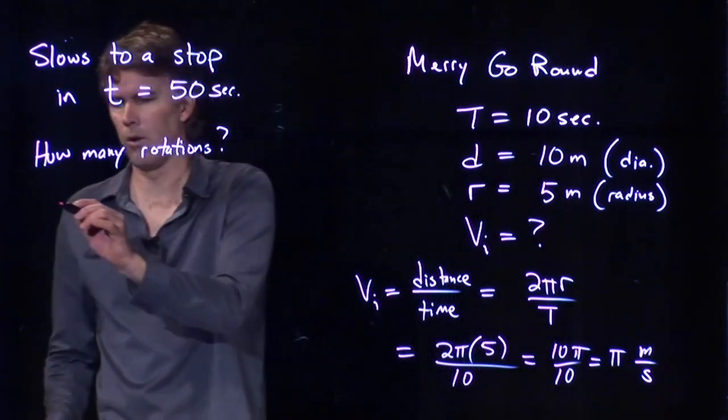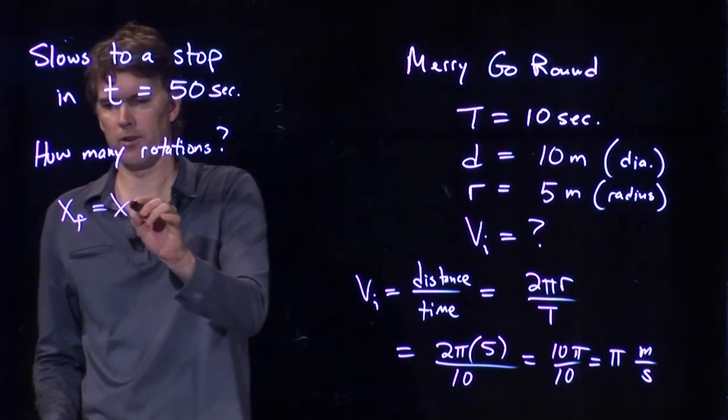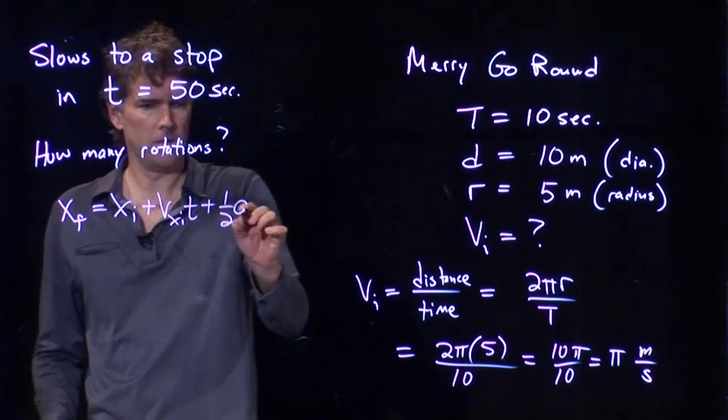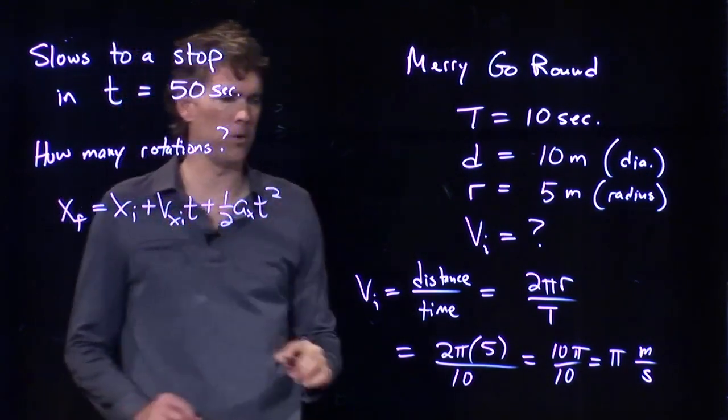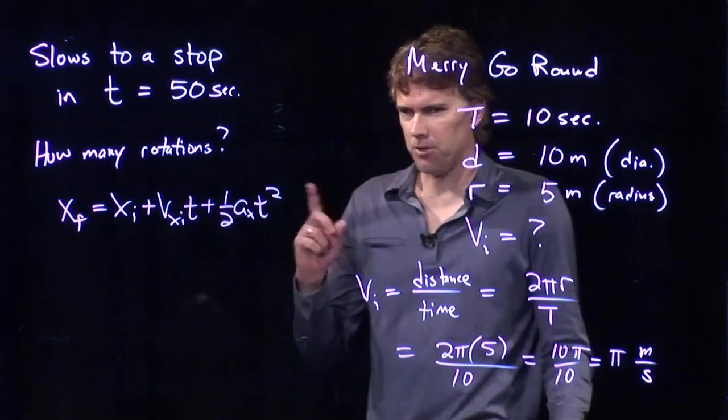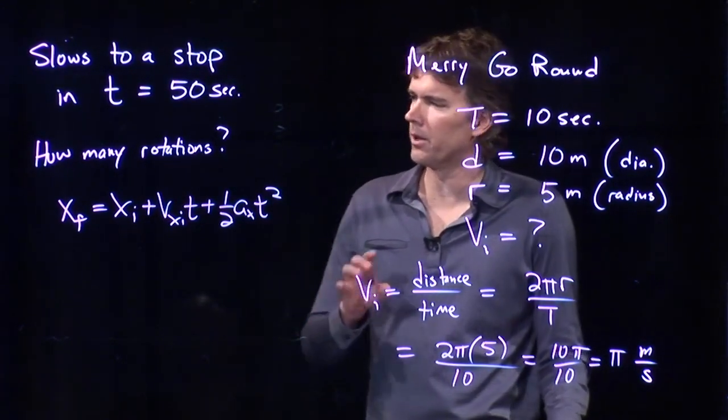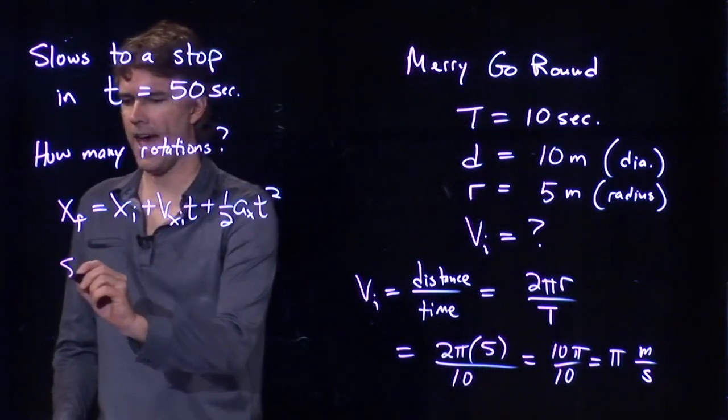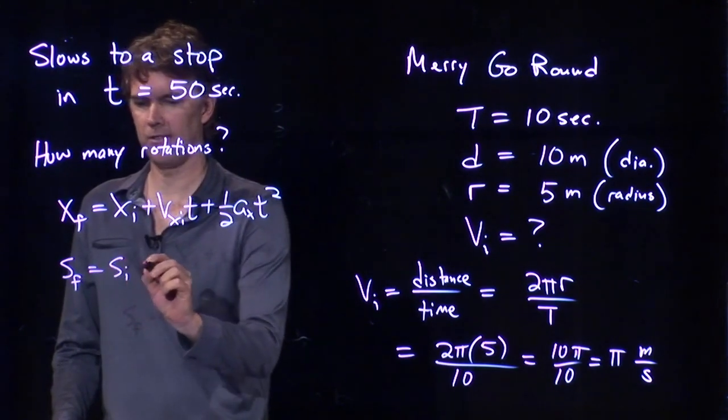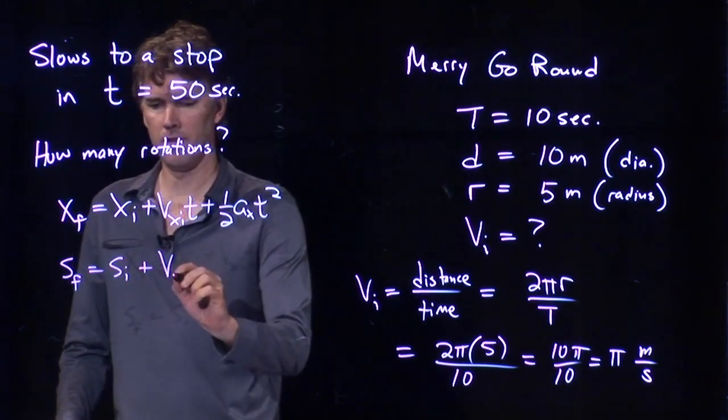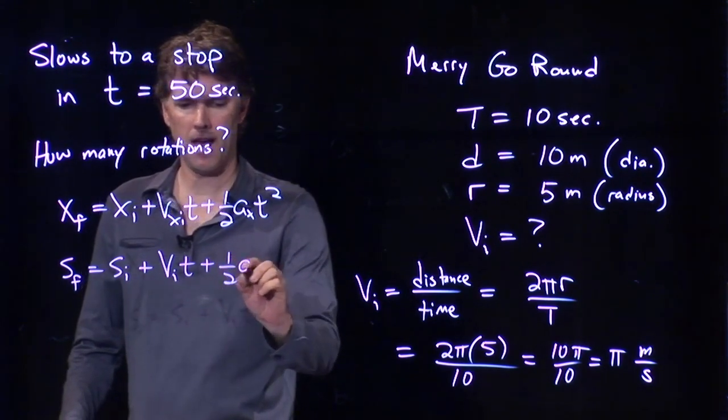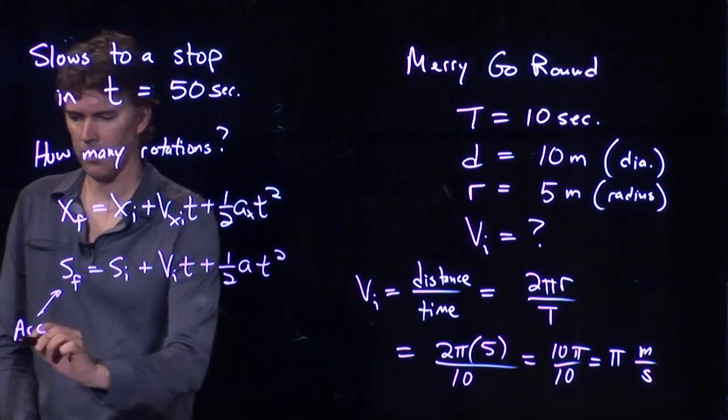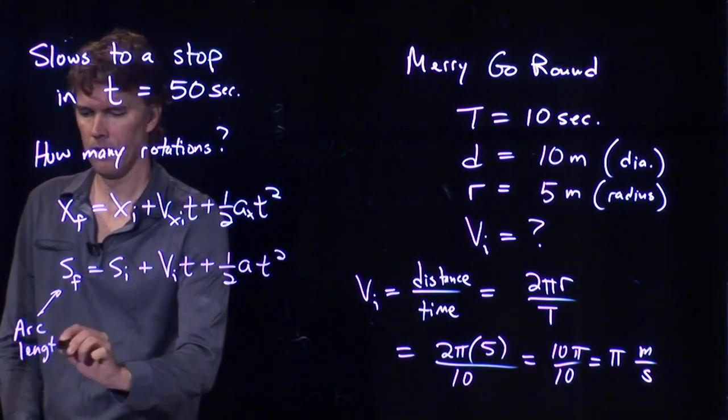All right, kinematic equations, we always wrote in x and y. That's right, one of them: x final equals x initial plus vx initial times t plus 1 half ax t squared. But, of course, we're in rotational motion here, and so we don't really want to use x anymore. We should probably use s final equals s initial plus v initial times t plus 1 half a t squared. And this is going to be the arc length. How far around have we gone? What is our distance around the edge that we've gone?